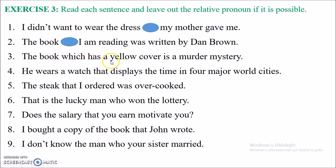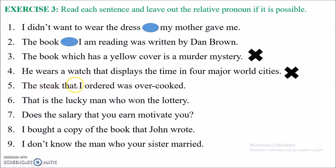Number three: 'The book which has a yellow cover is a murder mystery.' After 'which', I have directly the verb 'has' — so this pronoun is the subject. In subject relative pronouns, we cannot omit the pronoun — not possible. Number four: the pronoun is 'that' and directly after it is the verb — again no omission. Number five: 'The steak that I ordered' — after 'that' there is a subject, so this is object relative clause and we can omit 'that'. Number six: 'That is the lucky man who won the lottery' — directly a verb after 'who', so subject position, no omission.